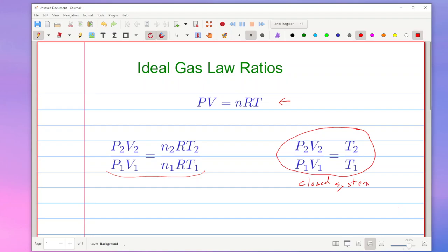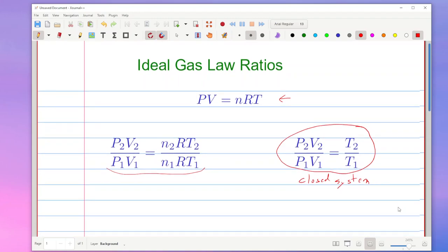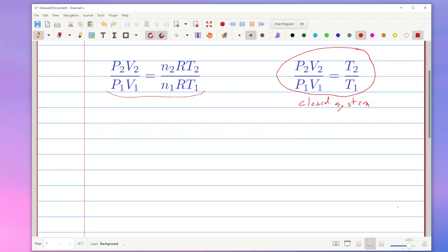Now when it comes to using it, we don't always use this form. Sometimes there's even more simplifications that can happen. So I'm going to take a look at those simplifications and go through the algebra. Let's say, for example, we have a situation with constant pressure, and that means P1 is equal to P2. In that case, this equation can be reduced down to just V2 over V1 equals T2 over T1, because the pressures will divide out on the top and the bottom.